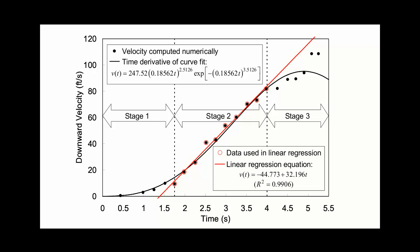There are formulas for finding the line that best fits a set of scattered data. That's what NIST is doing here. The red line is the best straight line fit through the points in Stage 2.